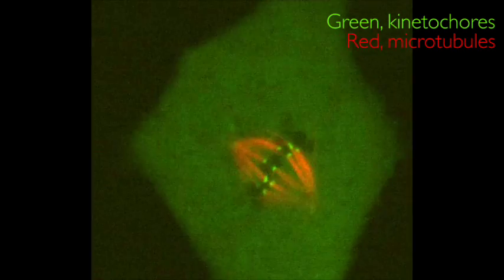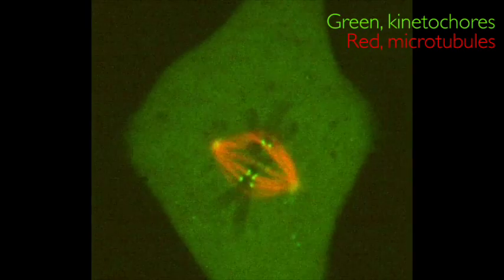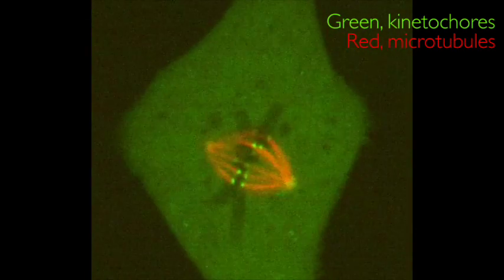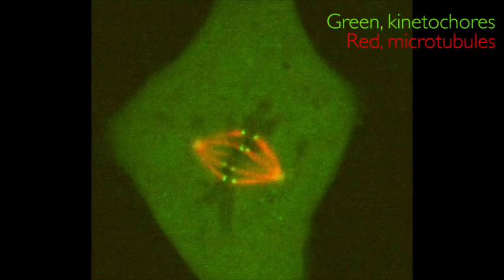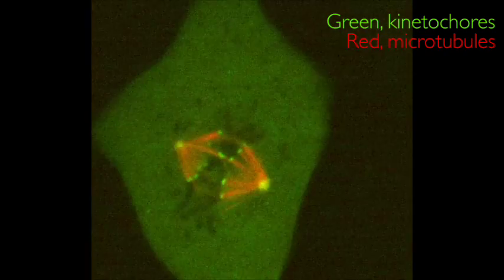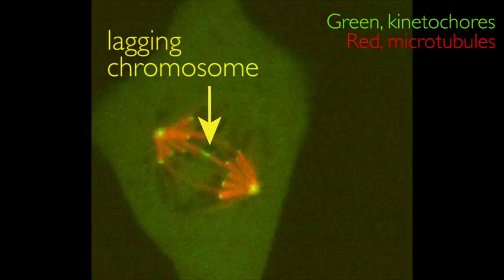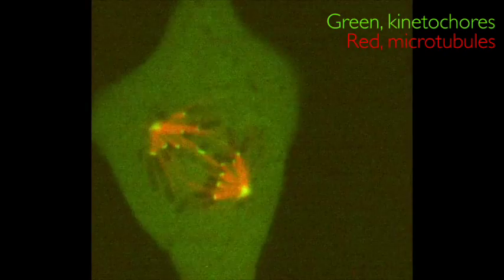So the question we're left with is, why does this happen? When we image cells with labeled kinetochores and microtubules, we see that this happens because the kinetochore — which is the attachment site between the chromosome and the mitotic apparatus — is bound by microtubules emanating from both sides of the cell, so no one is winning at the game of tug-of-war.